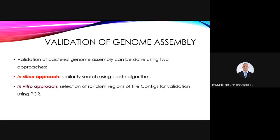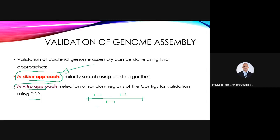Validation of genome assembly can be done in silico using BLAST (Basic Local Alignment Search Tool) to compare your assembly with known genomes at the GenBank, or using an in vitro approach involving selection of a random region of the contig for validation by PCR. You design a primer pair on certain regions of the genome, synthesize these primers, and conduct a PCR to determine the validity of your assembled contig.